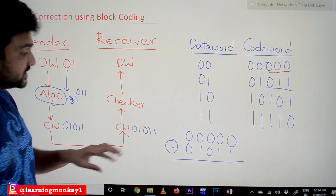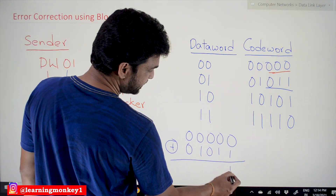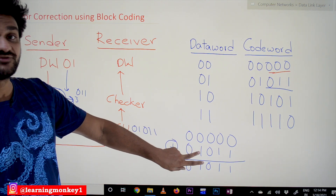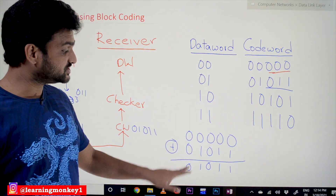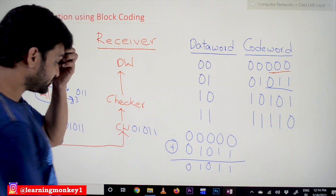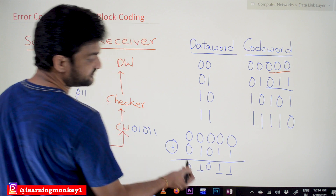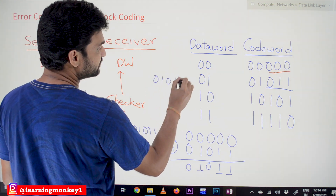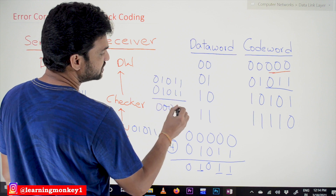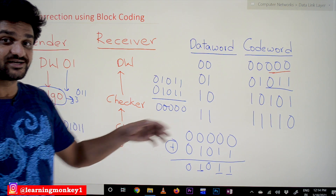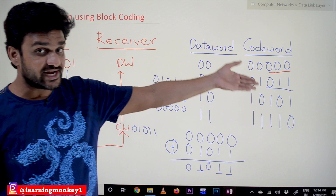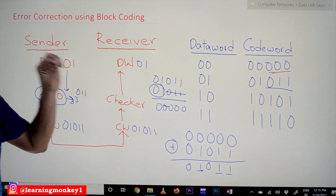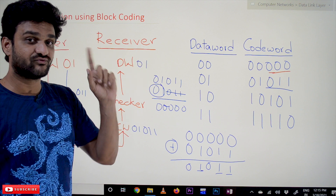The XOR gate produces output bits: if both bits are the same it outputs 0; if the bits are different it outputs 1. So for the comparison with '00000', three bits are different. When '01011' is compared with '01011', the output is '00000' — all bits are the same. So it decides the received code word is valid, removes the redundant bits, and the data word '01' is delivered to the receiver.